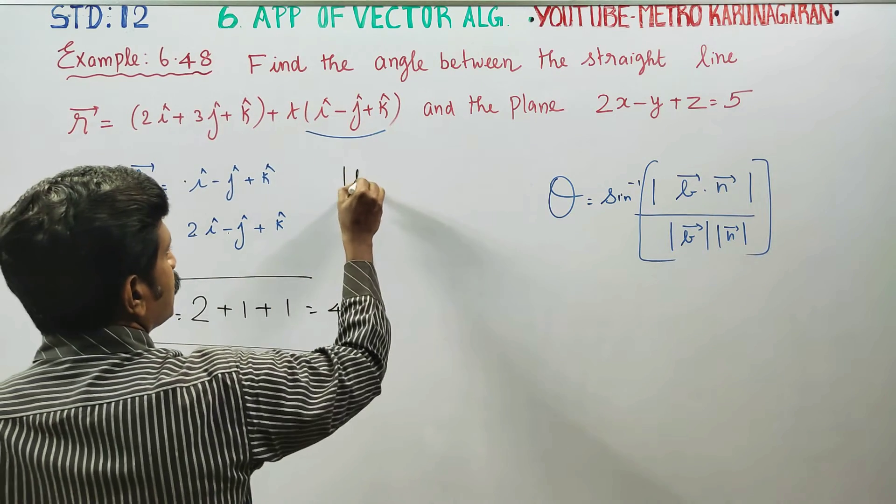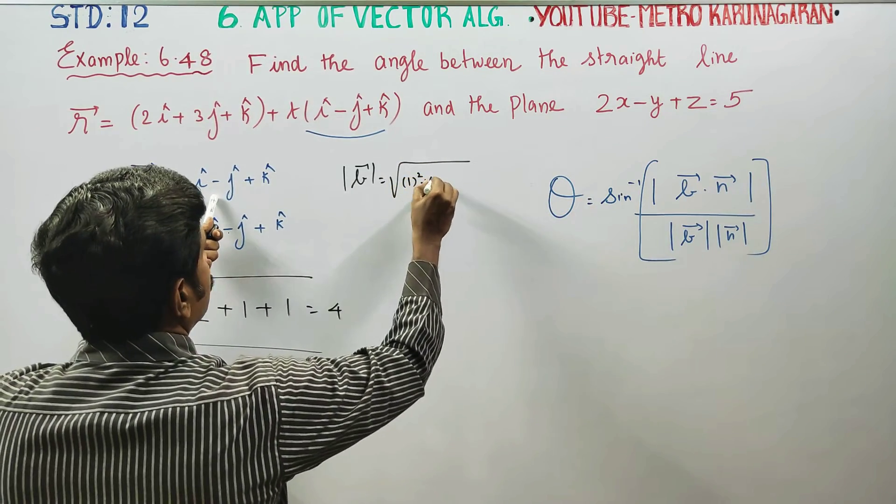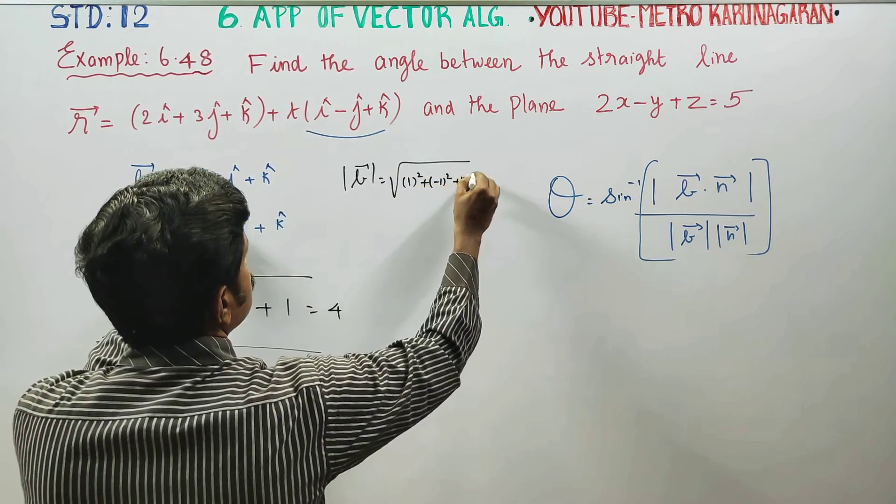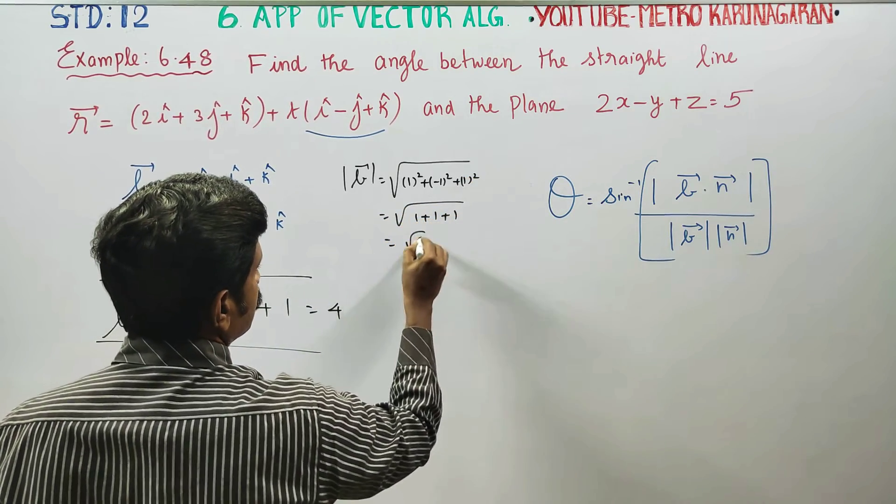Now magnitude of b vector is required: square root of 1 square minus 1 square plus 1 square. All that is 1. Minus square is positive. That is root 3.